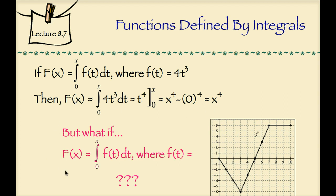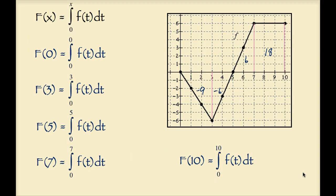But what if uppercase F of x equals the integral from 0 to x of f of t dt, where f of t is not given as a function but rather as a graph? We can find these function values by calculating the area between the curve and the x-axis from 0 to whatever x value is chosen. This integral functions as an accumulator of area between the curve and the x-axis.